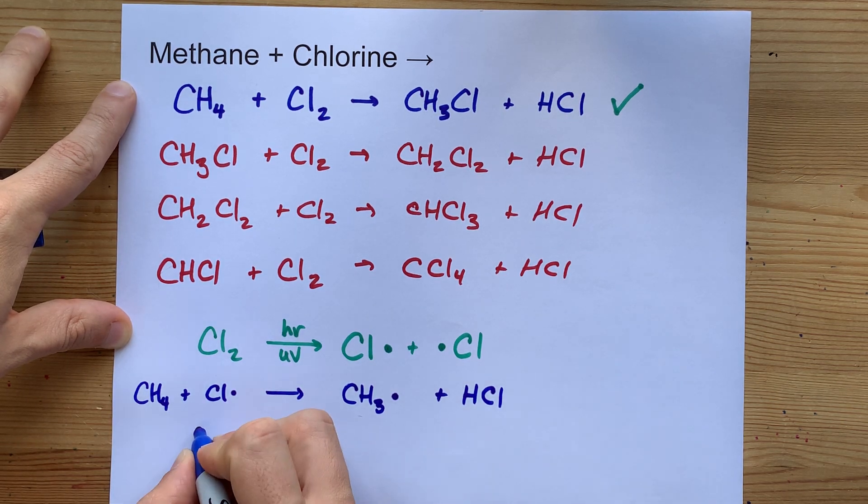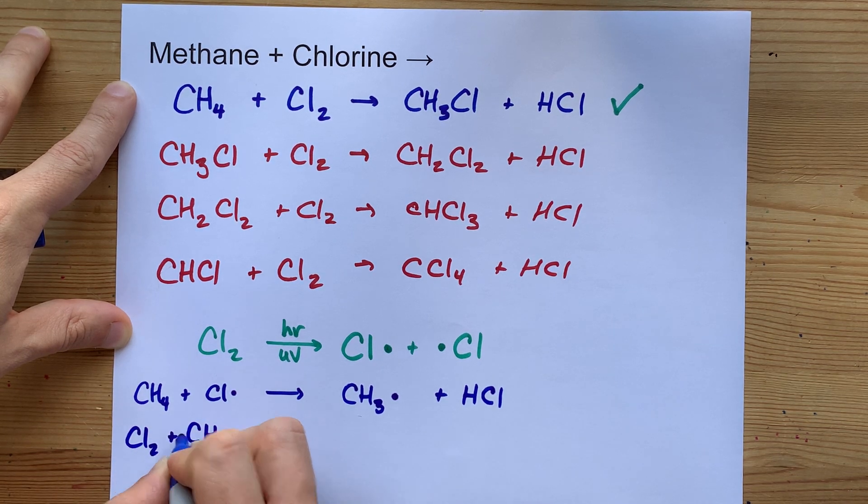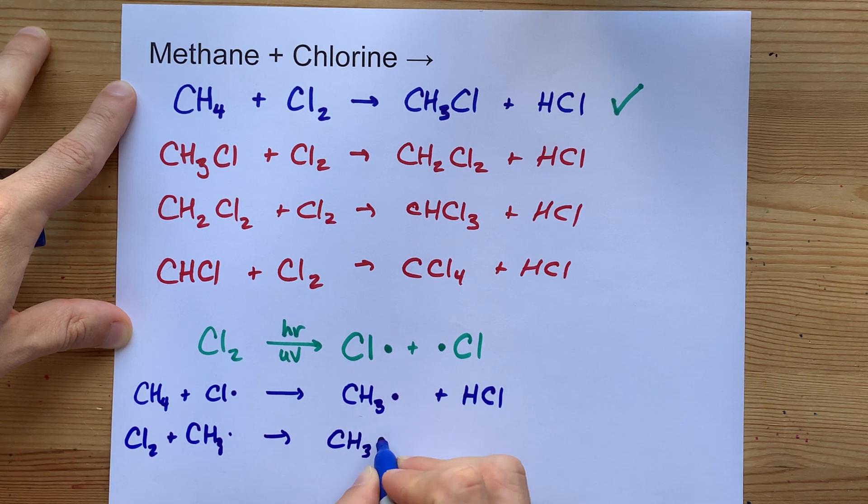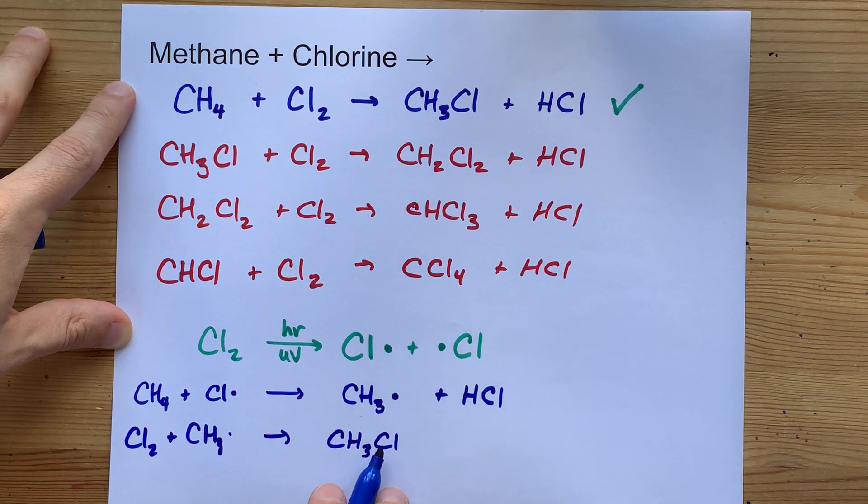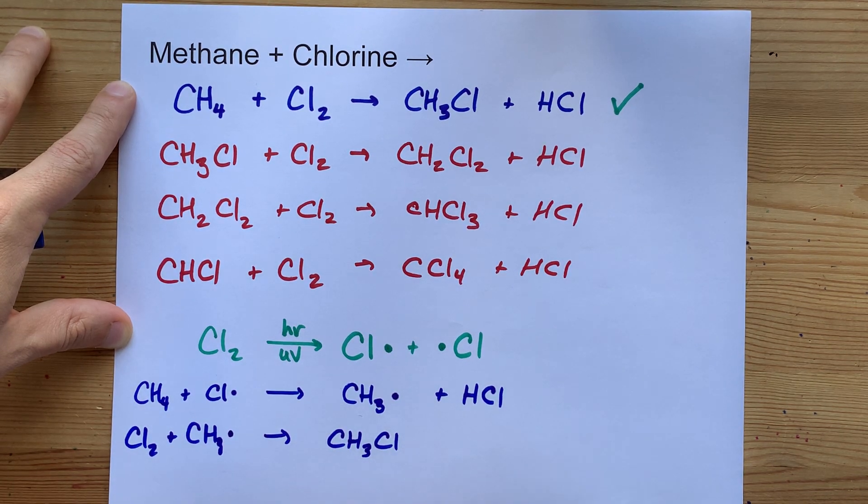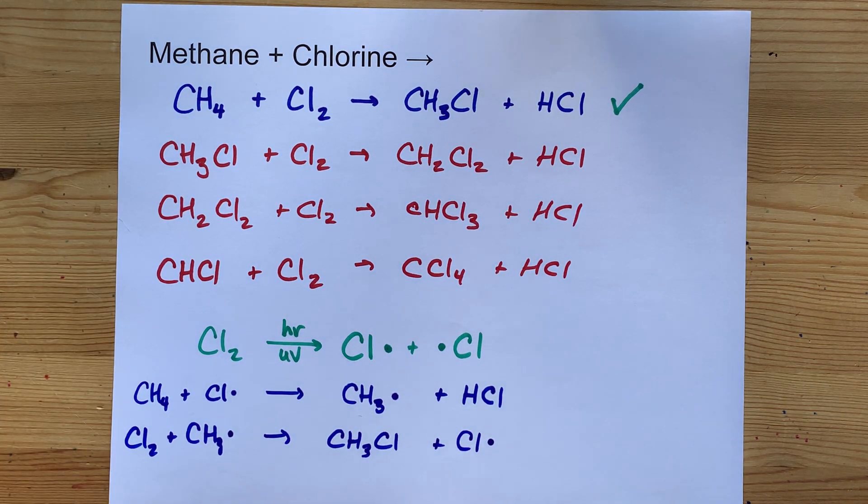That CH3 is likely to react with a chlorine gas molecule. It will become stable as methyl chloride, or chloromethane. But because it needed one of the electrons from the bond to pair off with that unpaired radical, you end up recreating the chlorine radical.